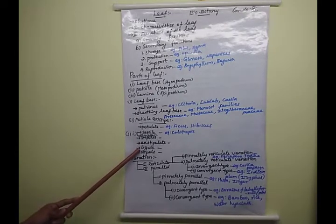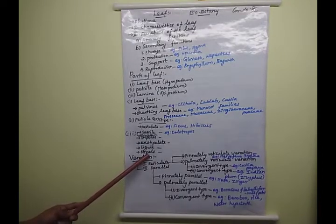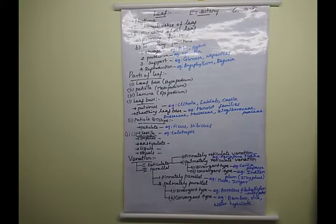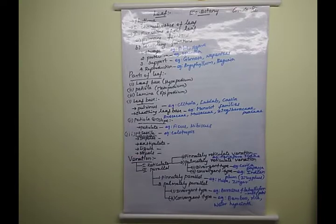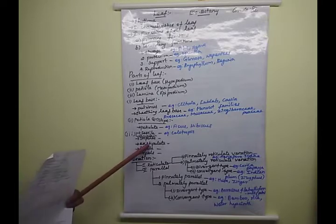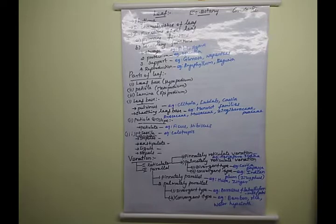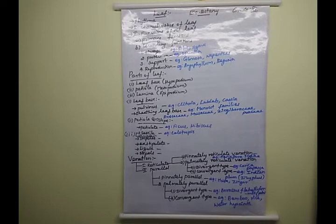Can you differentiate stipules and ligule? Next, what are stipels? Stipels are also outgrowth-like structures, similar to stipules, but they are present at the base of leaflets — especially in compound leaves. The stipels are found at the axial regions of the base of leaflets of a compound leaf. There are two leaf types: simple leaf and compound leaf.